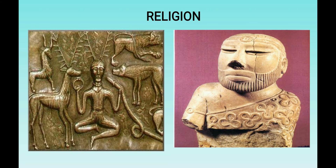Religion was not the basis of social bonding during the Indus Valley civilization. However, female figurines have been found and were probably worshipped by the Harappans. The bust of a bearded man found in Mohenjo-daro in 1927 is believed by historians to represent either a king or a priest. Historians also assume that the Indus Valley civilization people probably practiced nature worship.